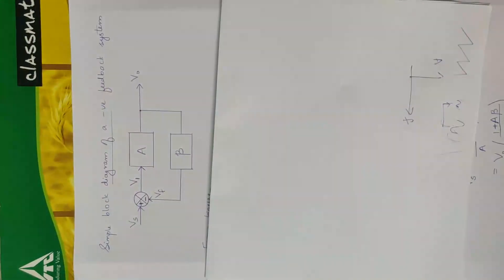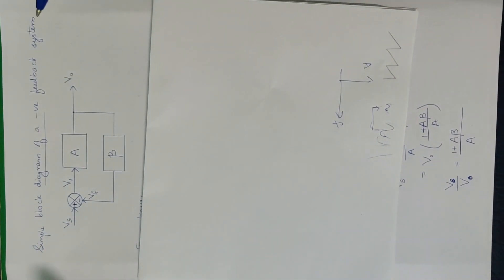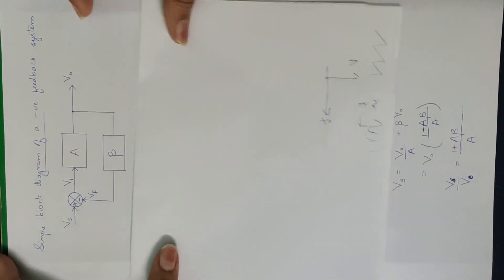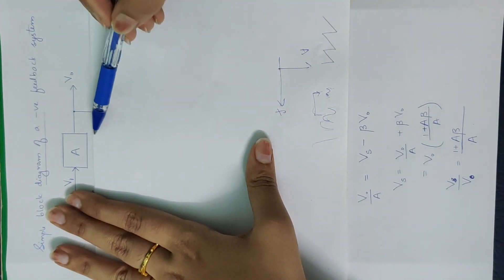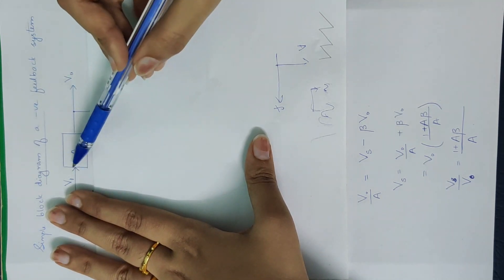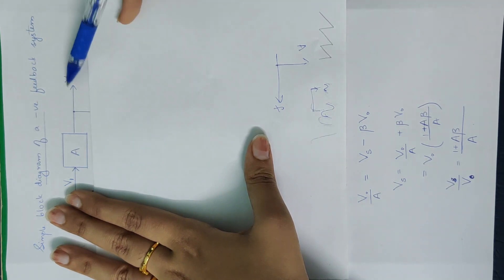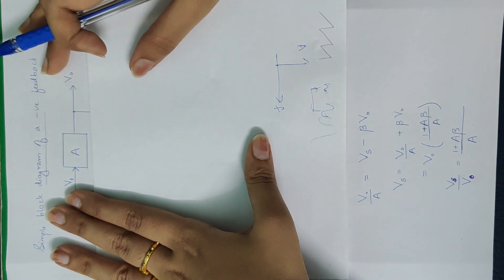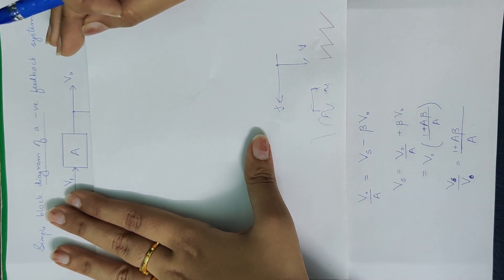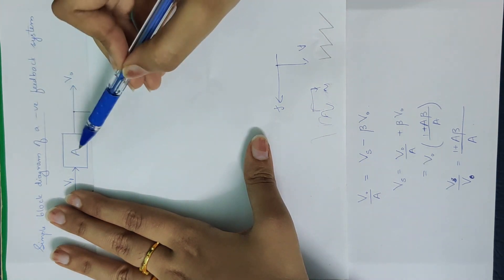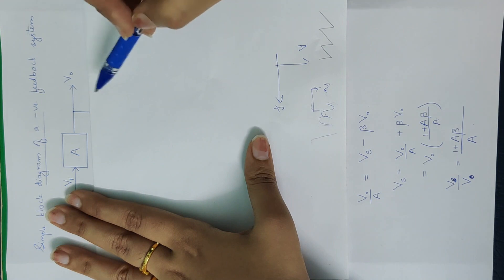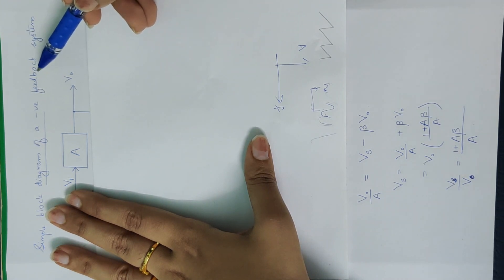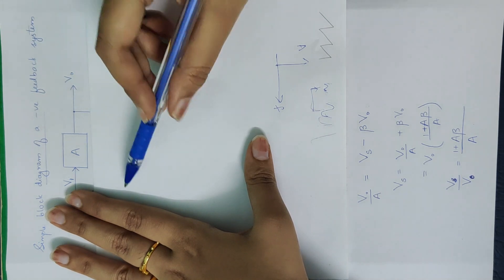This is a simple block diagram of a negative feedback system. In the block diagram, we have the amplifier with input V1 and output VO. This block is an amplifier. Now let's add feedback to this. A portion of the output signal is given back to the input.